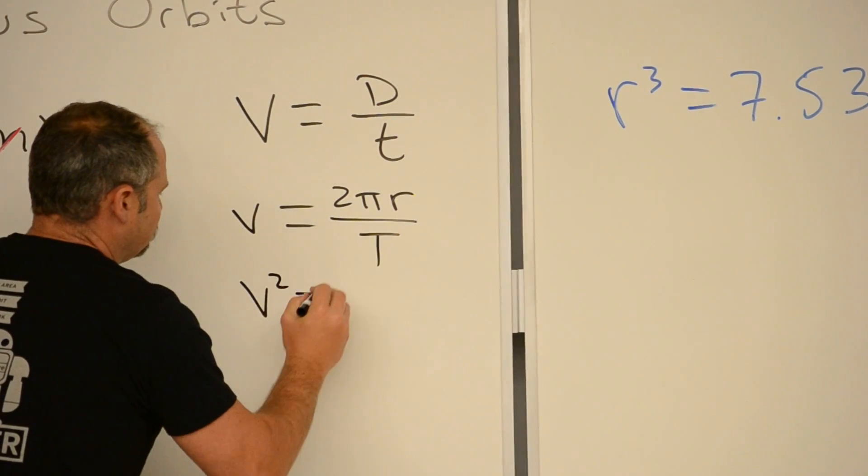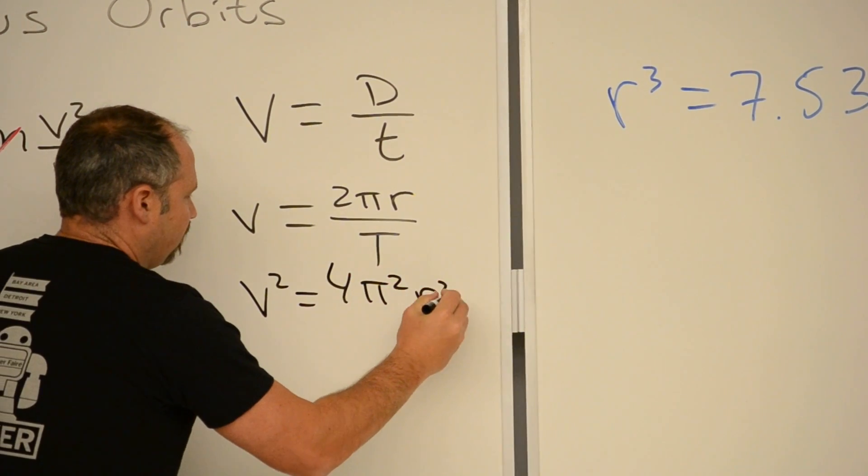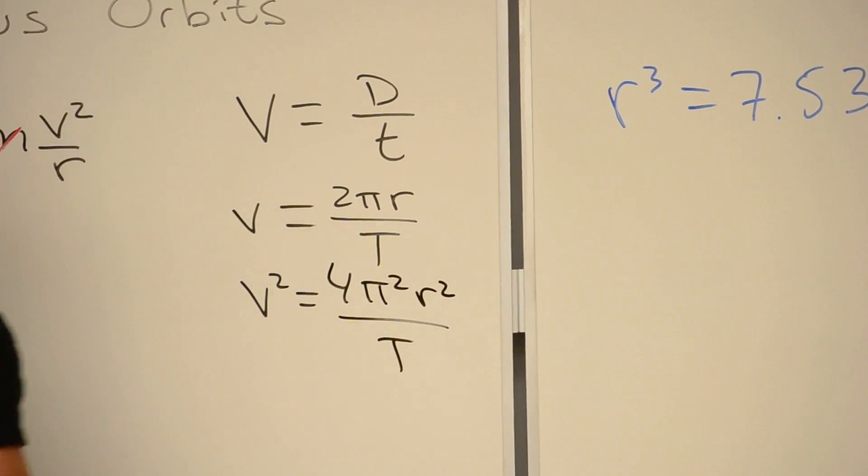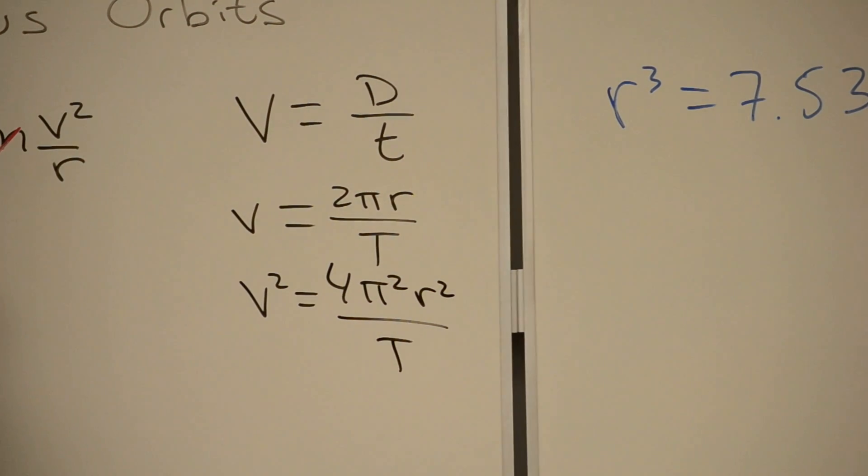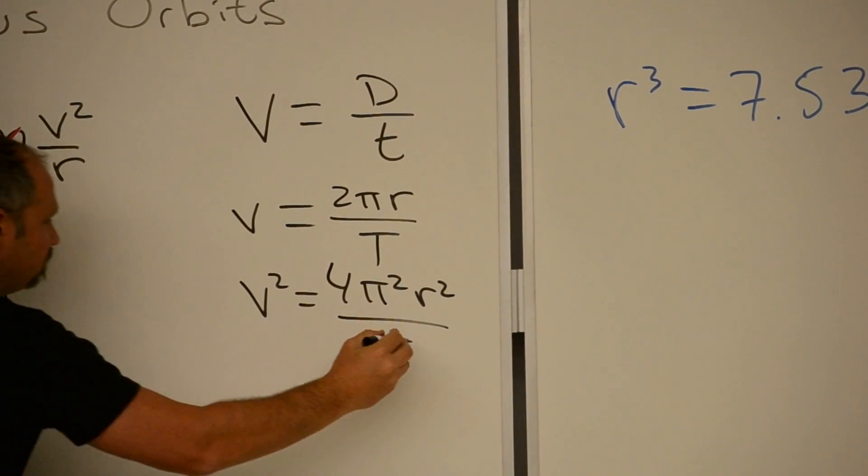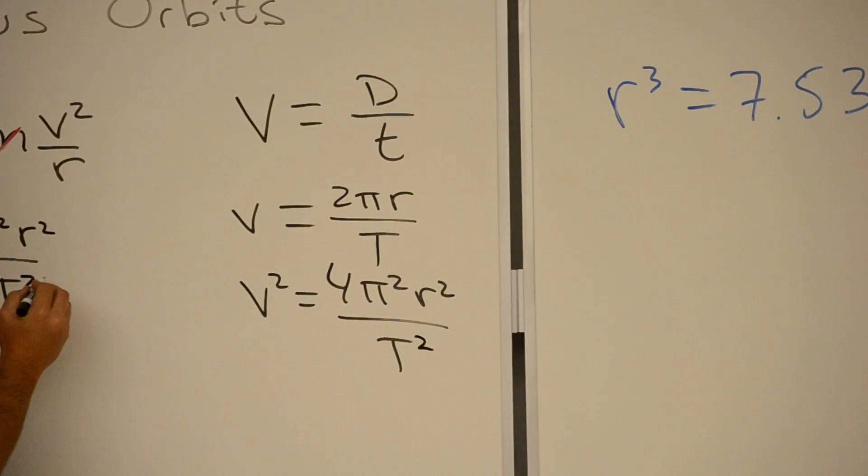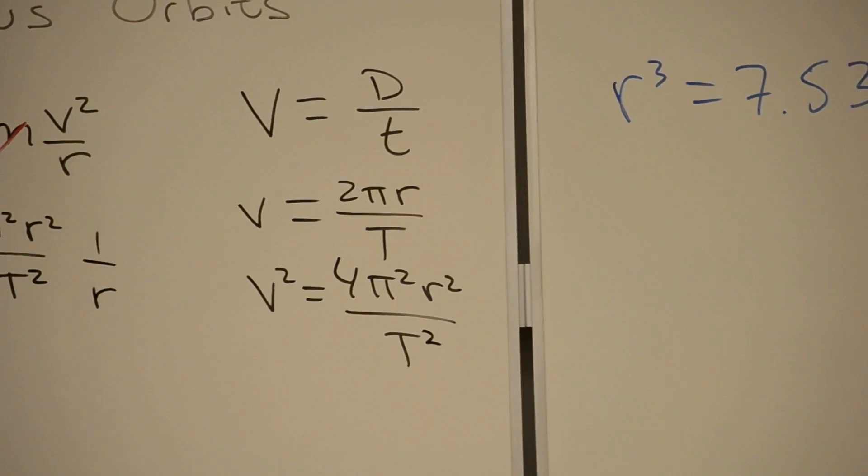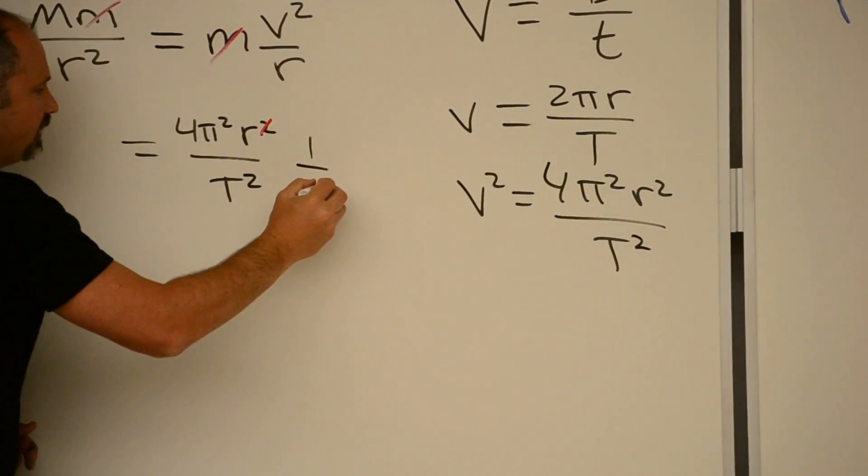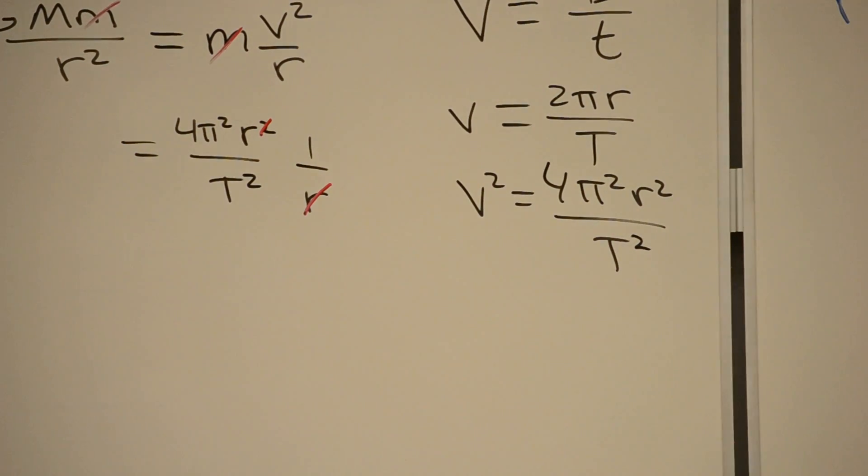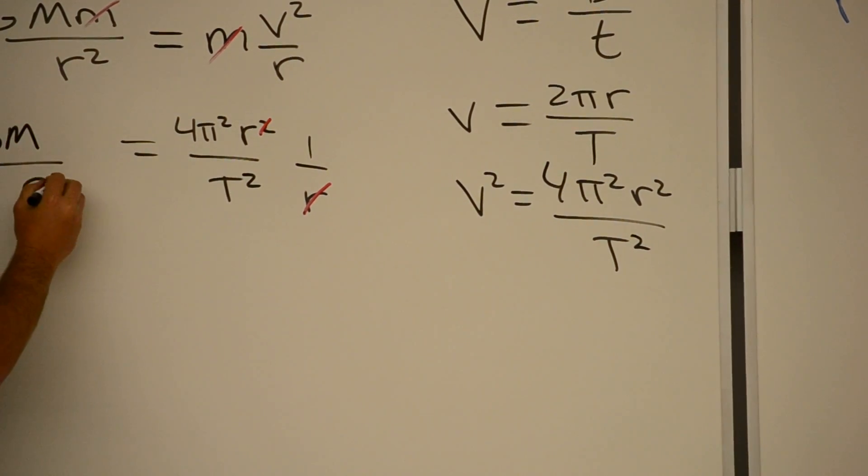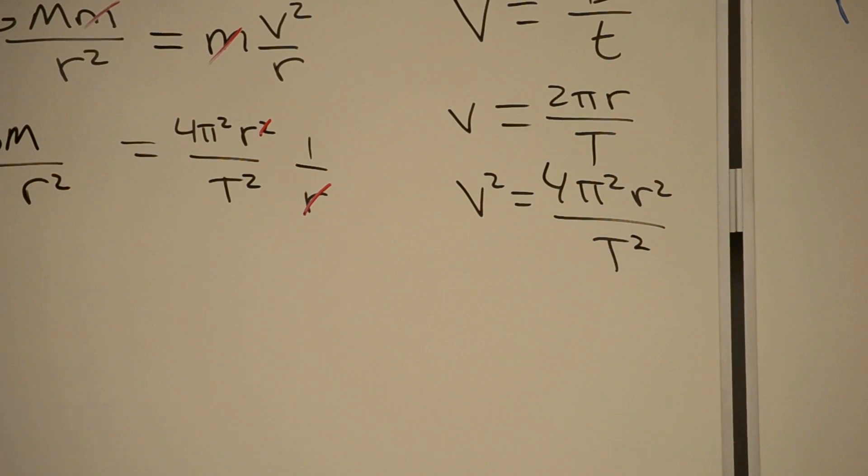V squared would simply be the square of this, 4π²r² over T squared. So let's plug that in for v. And I get 4π²r² over T squared. And that's all divided by a 1 over r. So I can see that this guy will cancel. One of these guys cancels with that guy. And now I will, well, let's write out the other side.